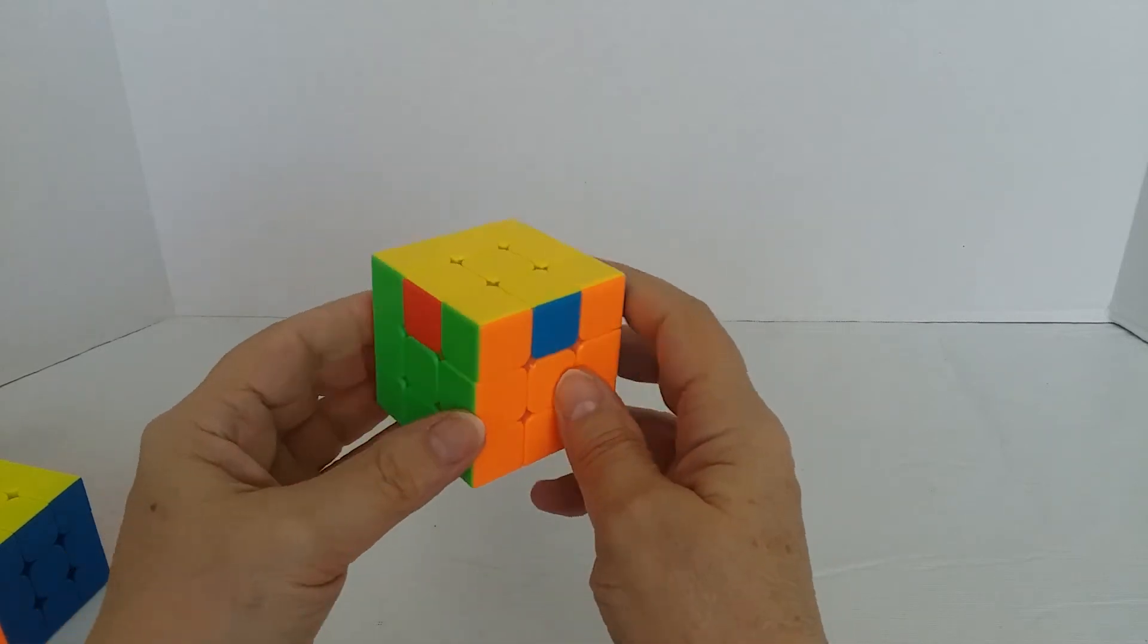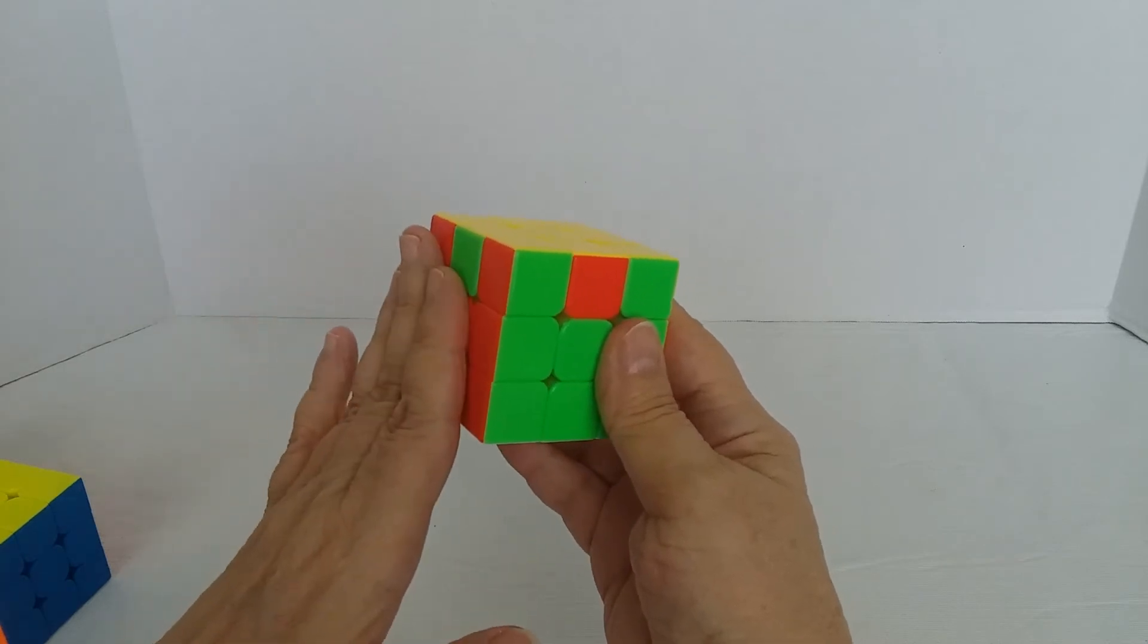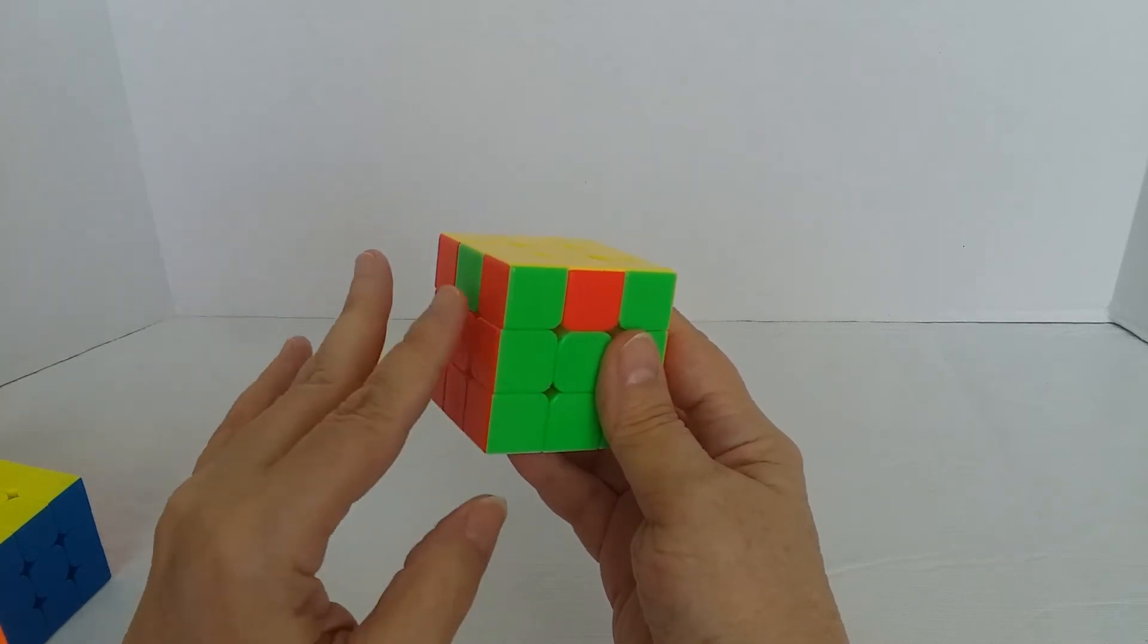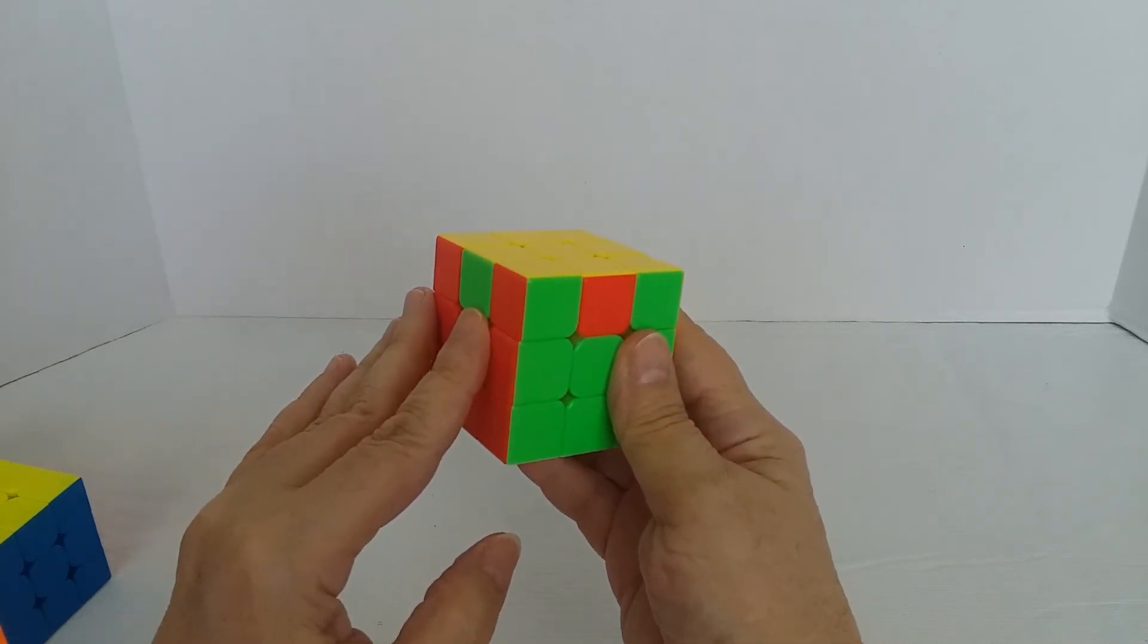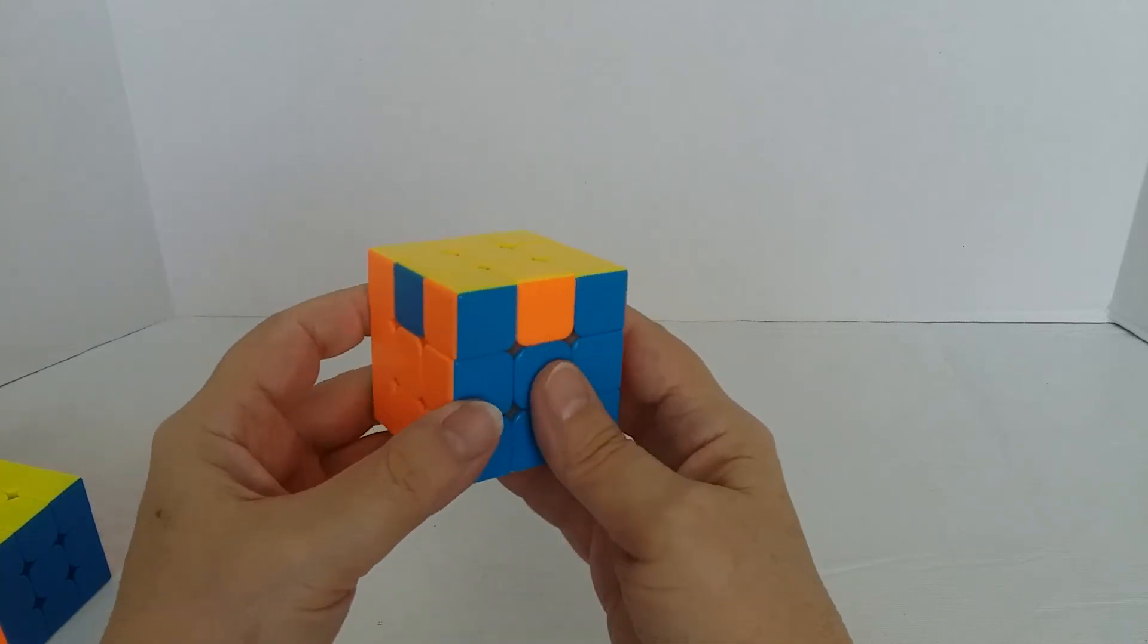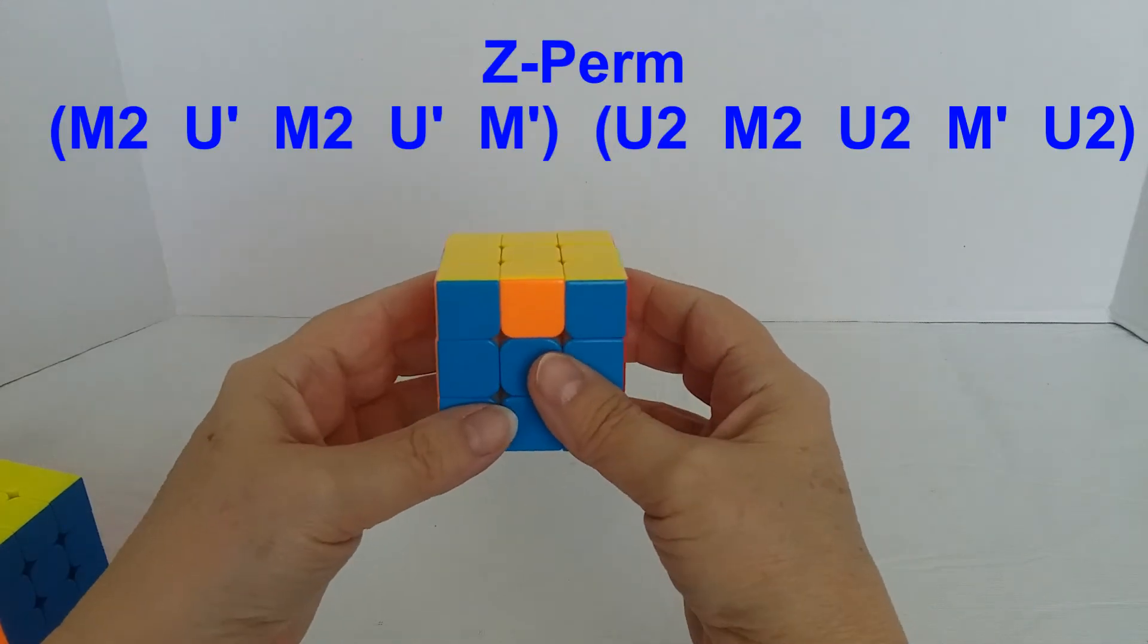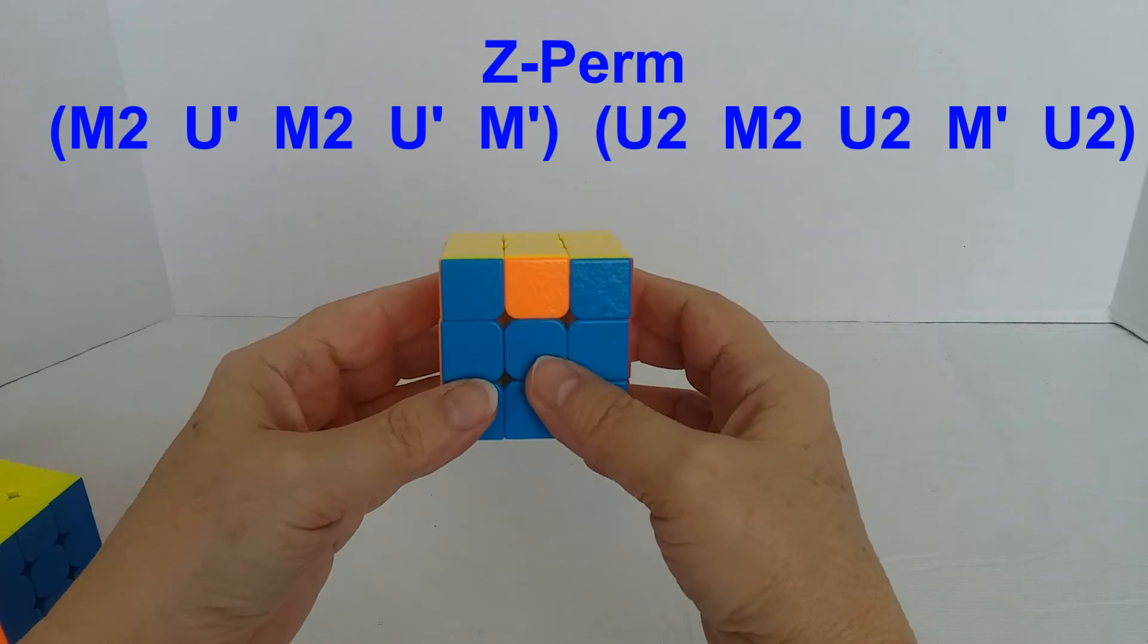So you position this so that these two, the front face and the left face, are the ones that are mixed up. So I could position this this way with red and green, not like this. Or I could do like this, orange and blue. So once it's positioned like that and you turn one of the faces toward you.